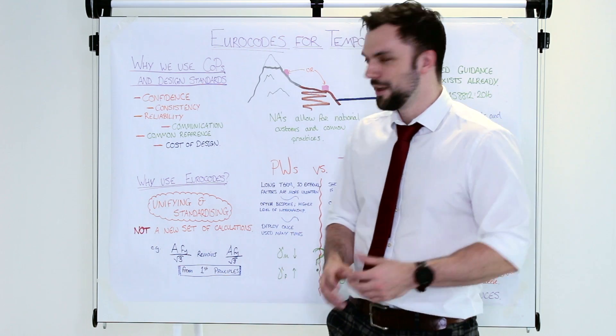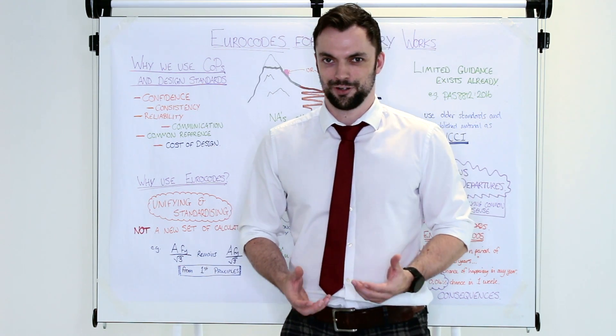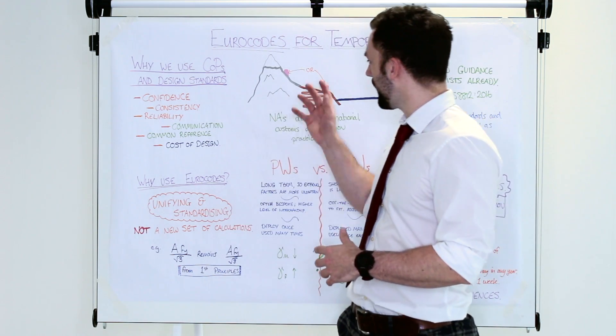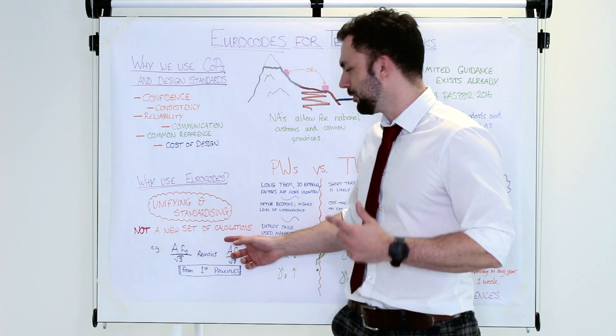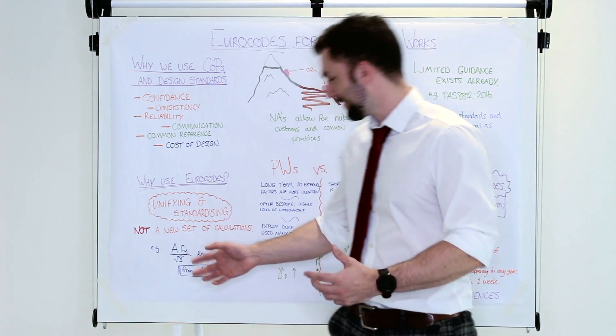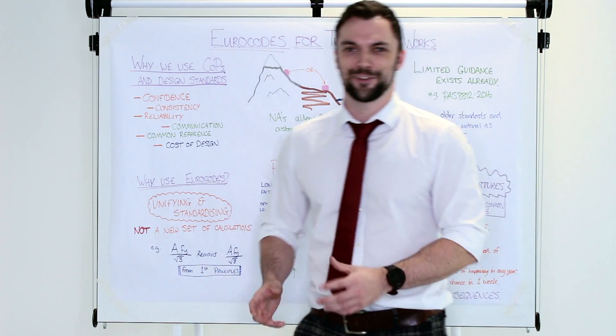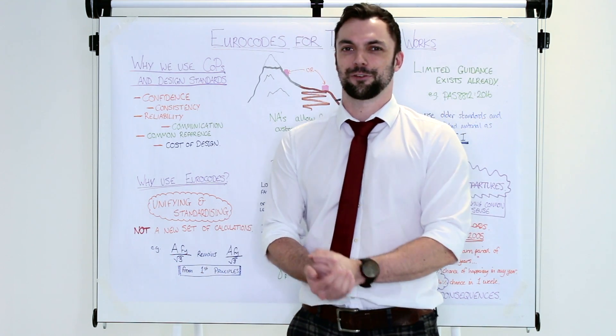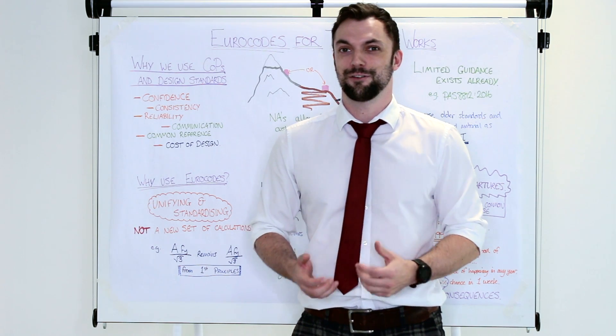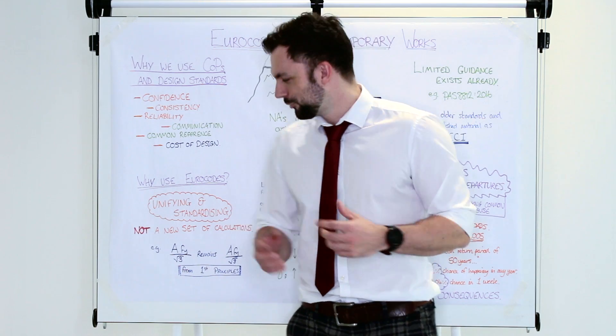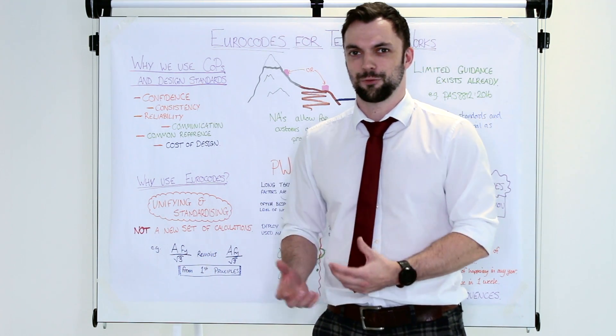How about Eurocodes? They were brought in to unify and standardize all of the different codes around European countries. They also allow you a set of partial factors and national annexes that you can change depending on where you are. What they are not is a new set of calculations. For example AFY over Route 3. If you remember back to the combined effects on whalers that I talked about before, this is from first principles from very basic fundamental calculations that will never change regardless of the engineering standard that you use. It's just a way of expressing these in a kind of a combined format that everybody can get to grips with and understand.